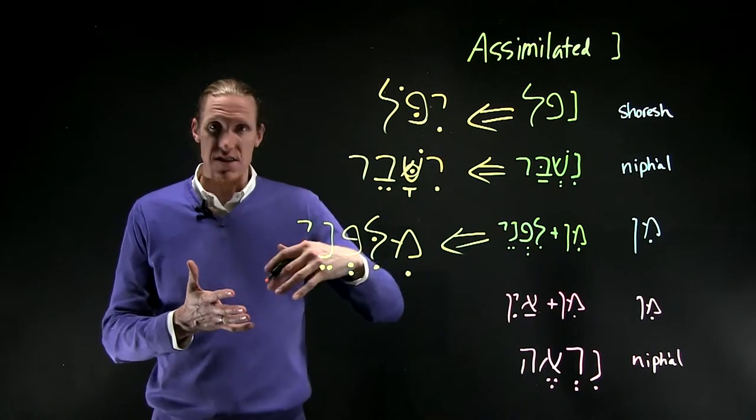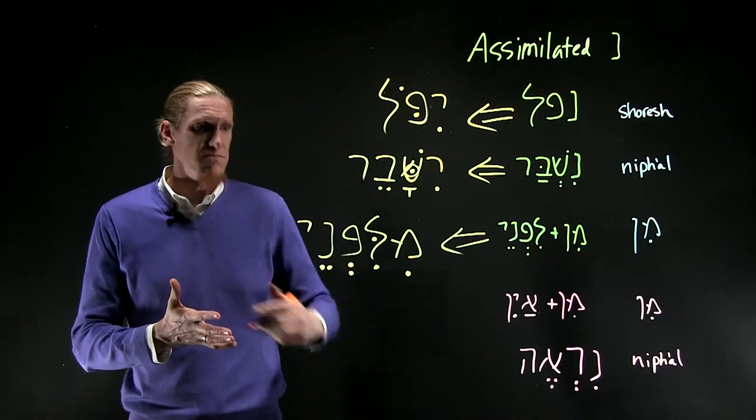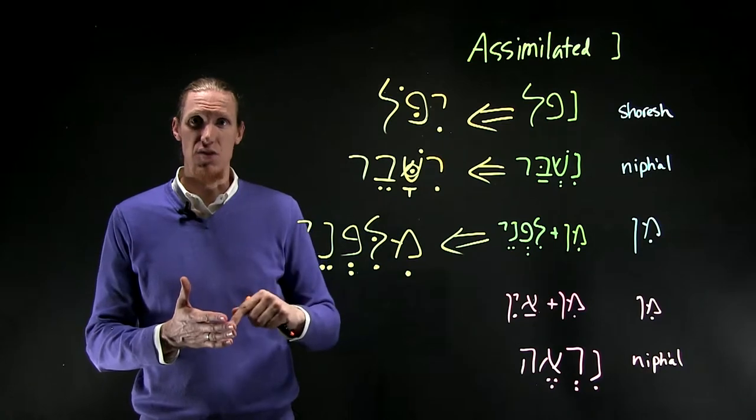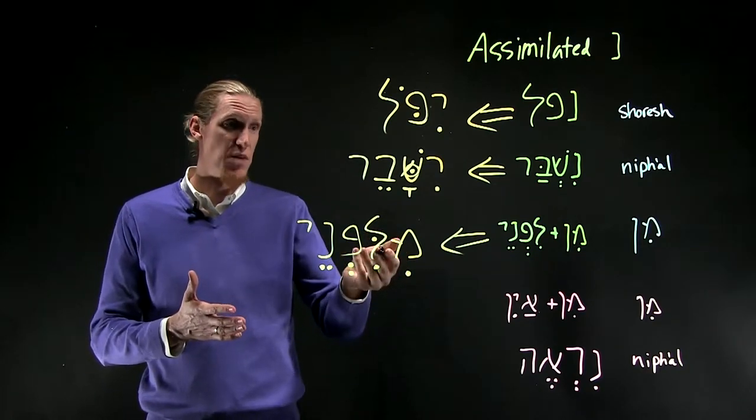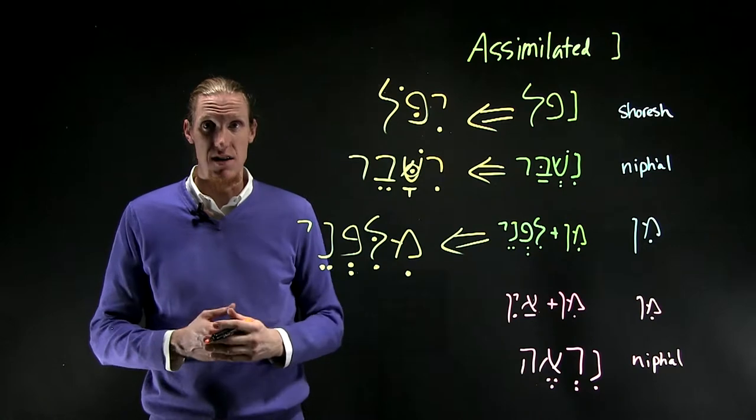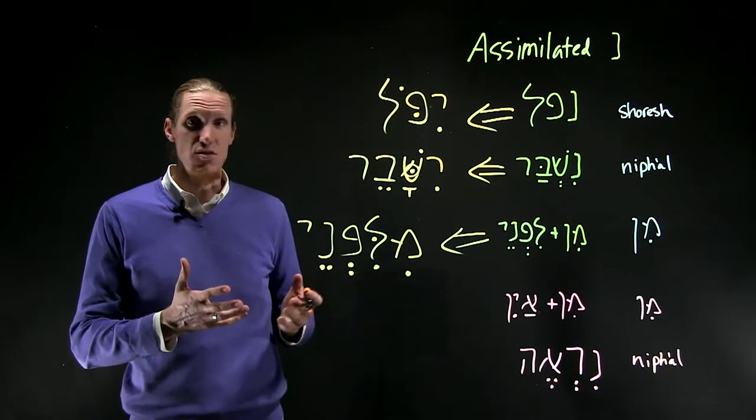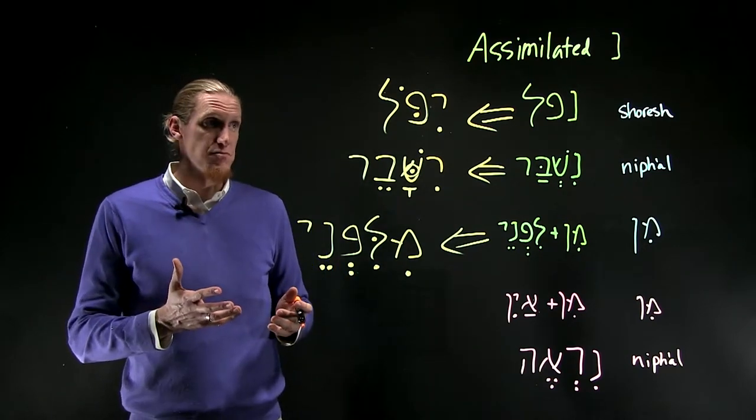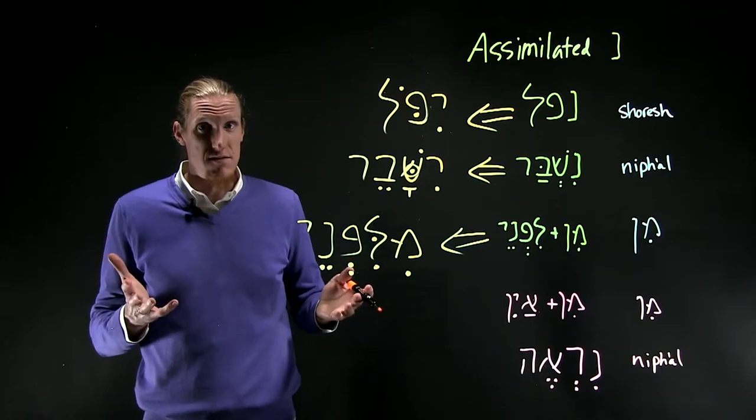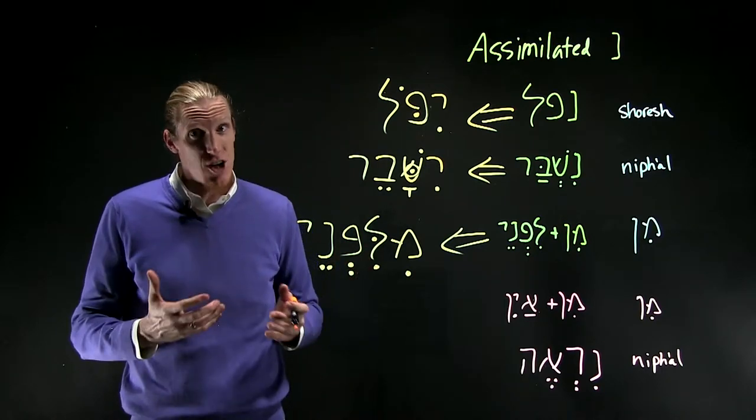When it assimilates into the next root letter, it becomes the next root letter. So instead of being a noon, now it's a lamed or a sheen or a pe. You might say to the noon, resistance is futile. You will assimilate. Sorry.